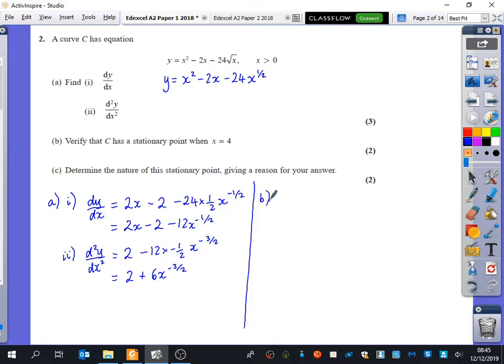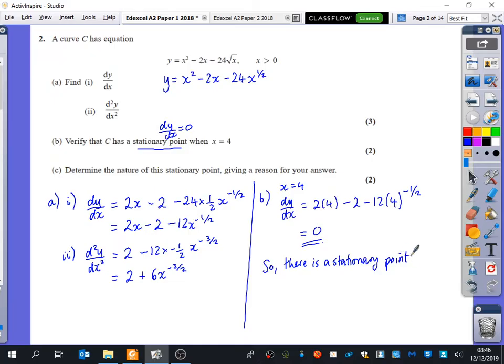Part B says verify that C has a stationary point when x equals 4. Now we know stationary points is when dy by dx is equal to 0. So what I'm going to do is I'm going to put x equals 4 into this. So dy by dx, when x is equal to 4, would be 2 times 4 minus 2 minus 12 times 4 to the power of minus a half. Put that in your calculator, and we get that it's equal to 0. So there is a stationary point. You must say this. You must say this for a mark. You can't just say dy by dx is equal to 0.